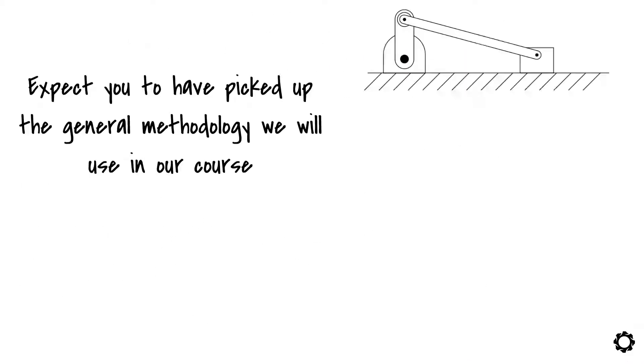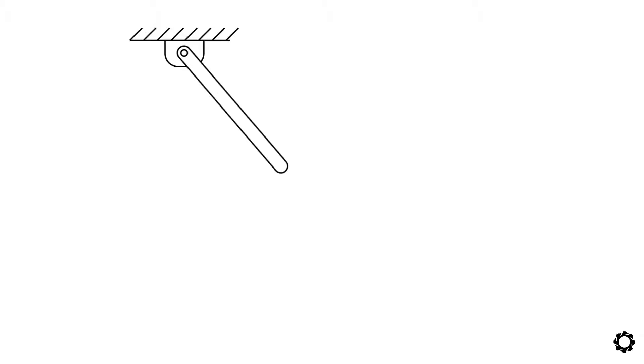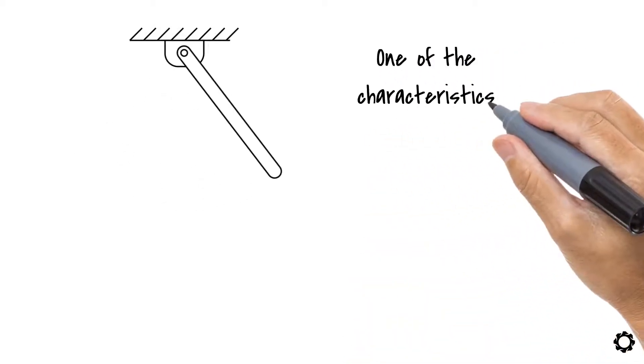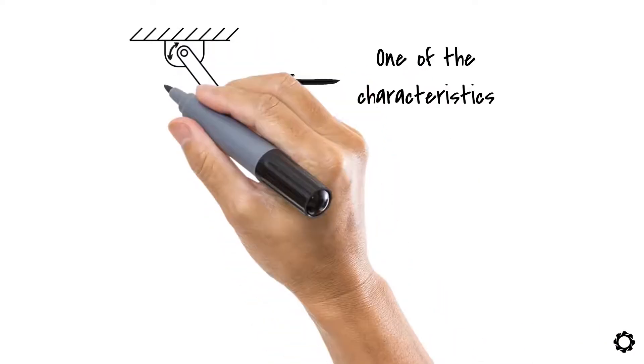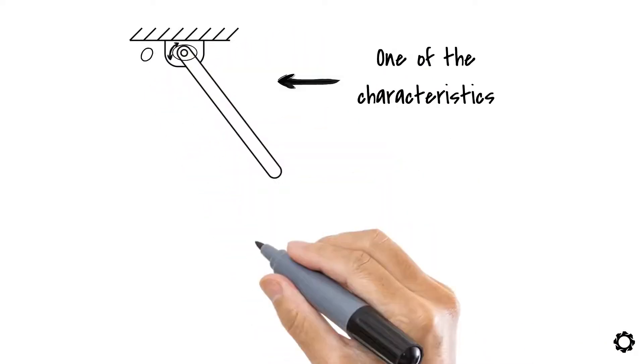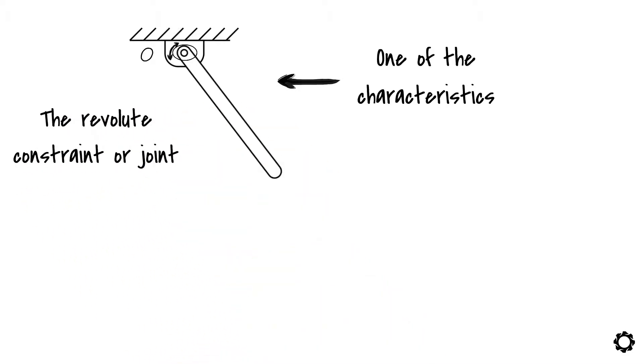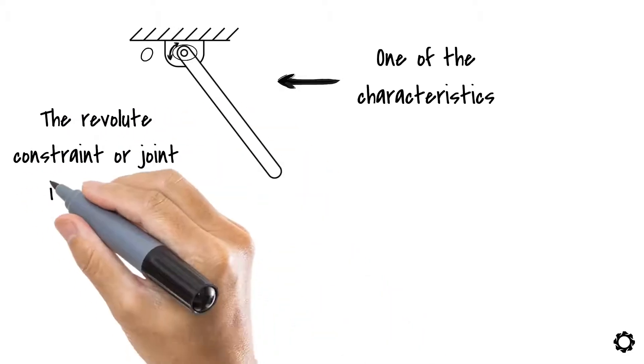Let's start with a simple pendulum. Notice how this simple pendulum moves and which are its degrees of freedom. One of the characteristics of a simple pendulum is that it is only able to rotate around point O. At point O, the revolute constraint or joint between the bar of the pendulum and the ground is located.